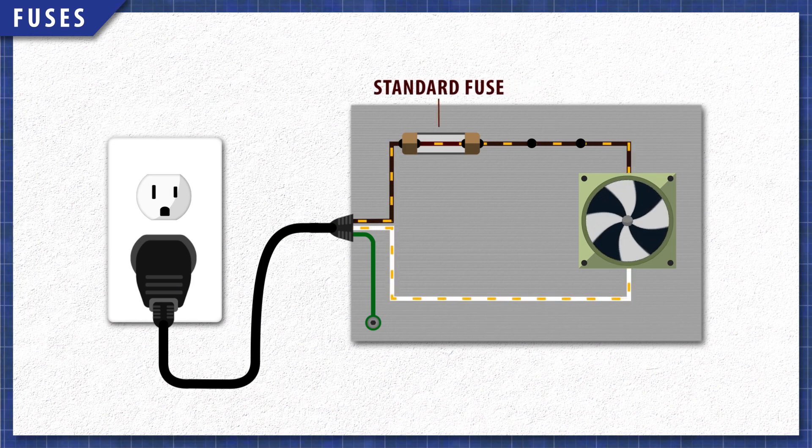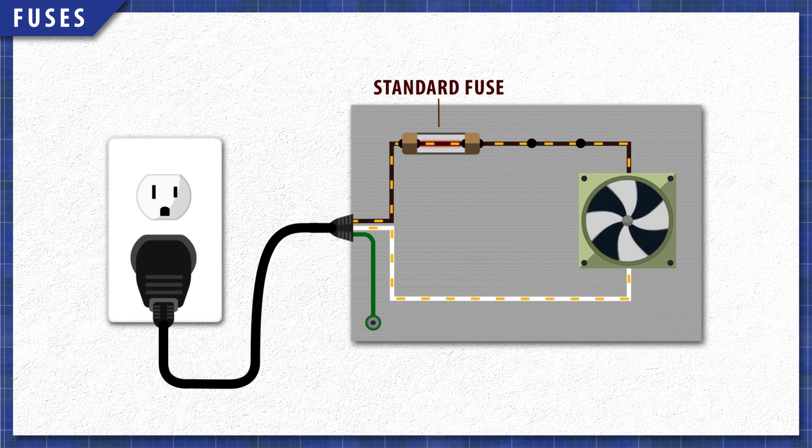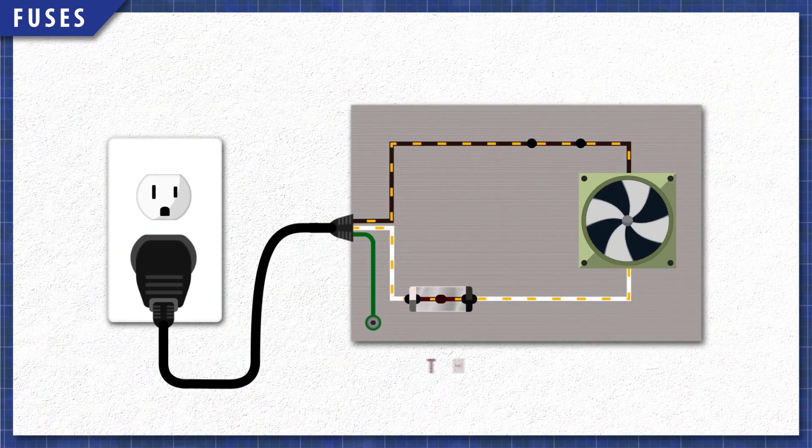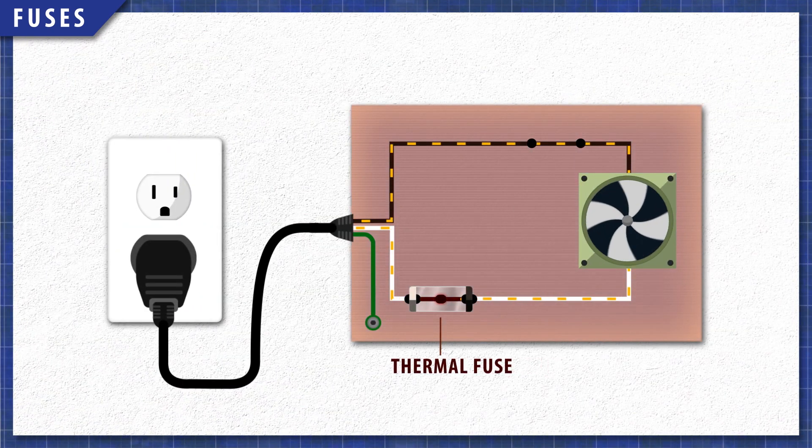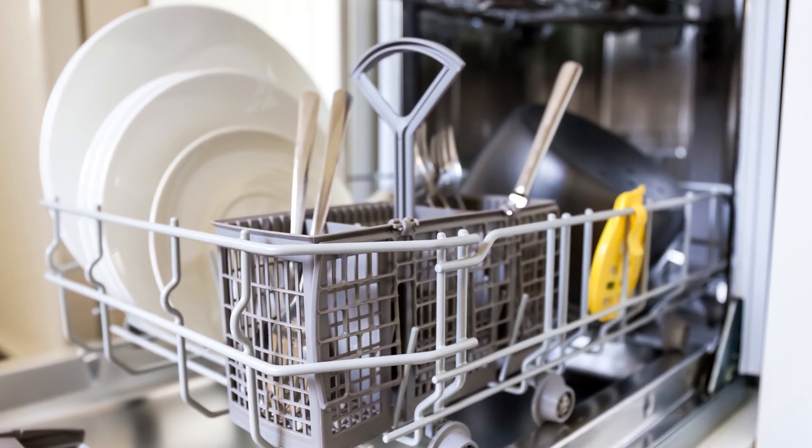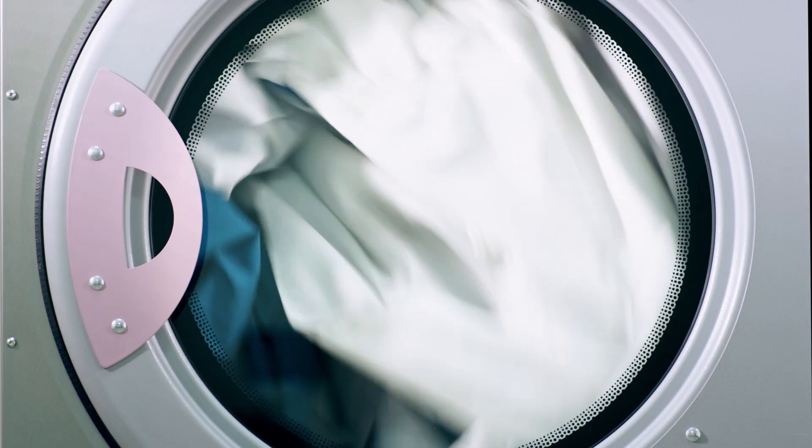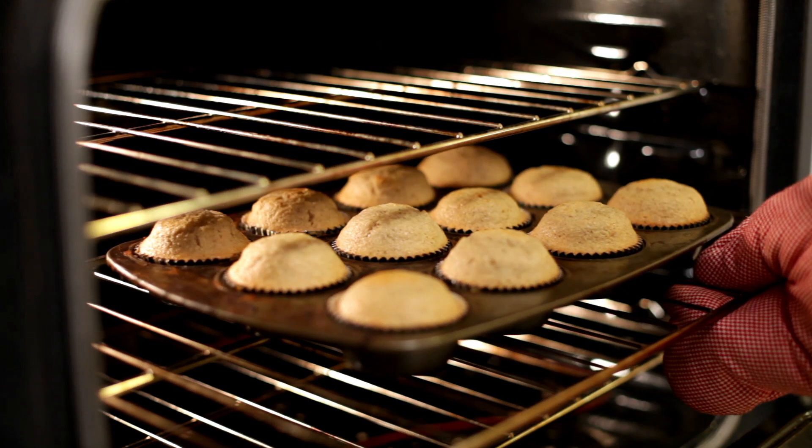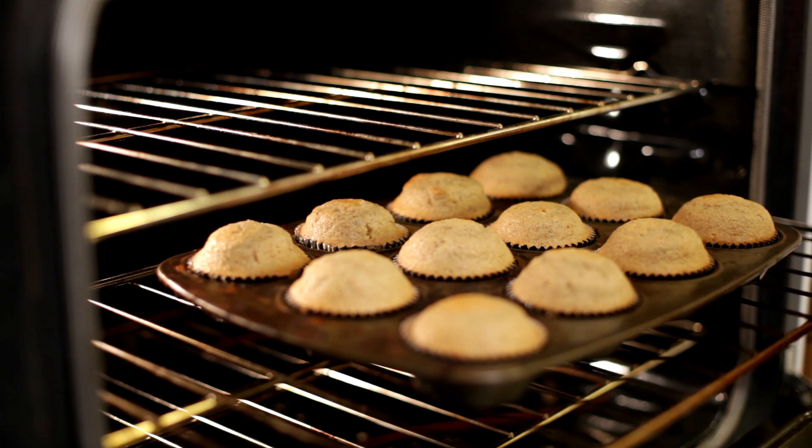Fuses are single use overload protection devices. Standard fuses have a thin wire that will melt when exposed to high currents. Thermal fuses are designed to fail at a set temperature, protecting against overheating. Thermal fuses are used in dishwashers, dryers, and in some ovens, but it's best to check your manual first.